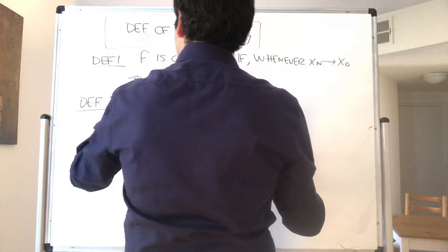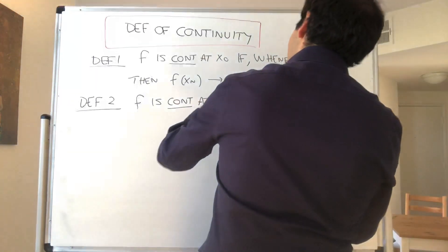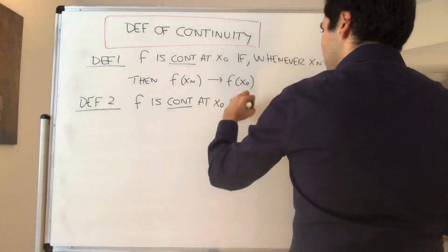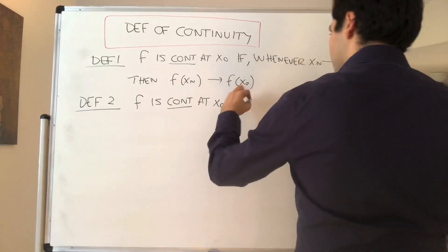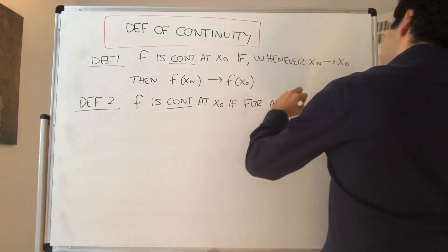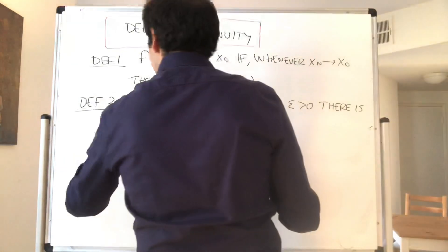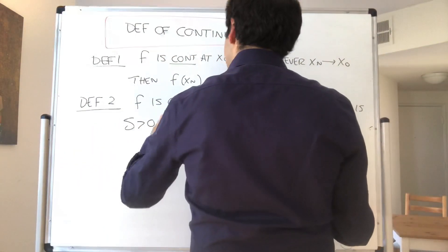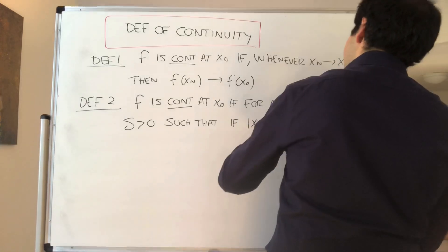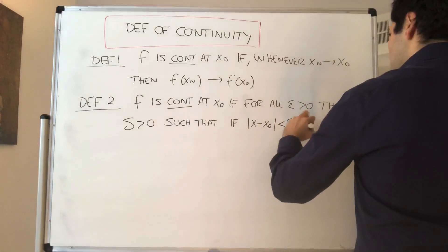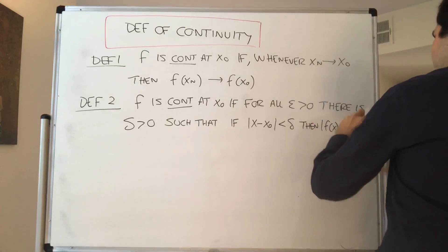The second definition is the epsilon-delta one: f is continuous at x naught if for all epsilon positive, no matter how small your error, there is a delta positive — some small threshold — such that if the absolute value of x minus x naught is less than delta, then the absolute value of f of x minus f of x naught is less than epsilon.